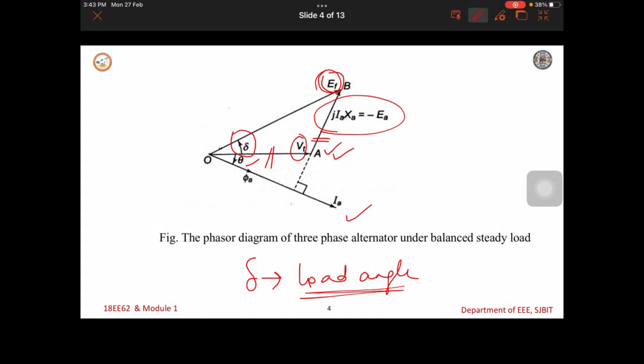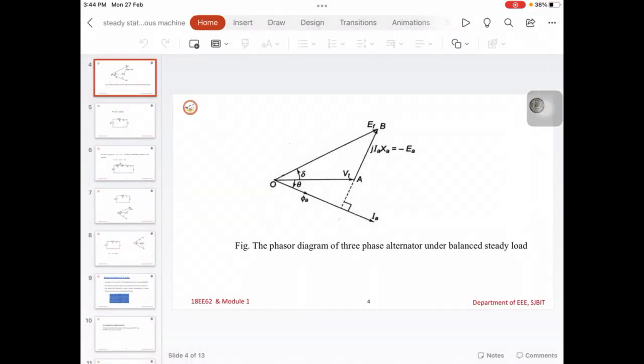Now, let us write the terminal voltage Vt is nothing but the excitation voltage minus J into IA into XA, because this EF is more. Or you can write EF is equal to Vt plus J into IA XA. Induced voltage is more than the terminal voltage. Let us write the equivalent circuit of this in the next slide.